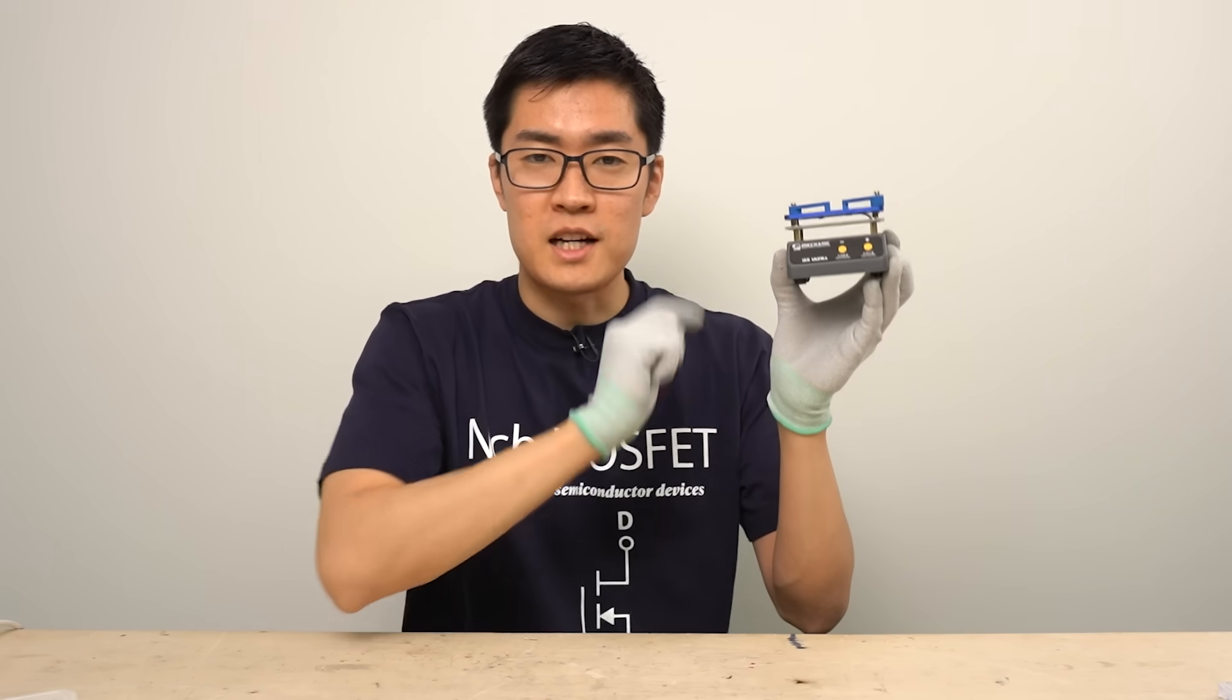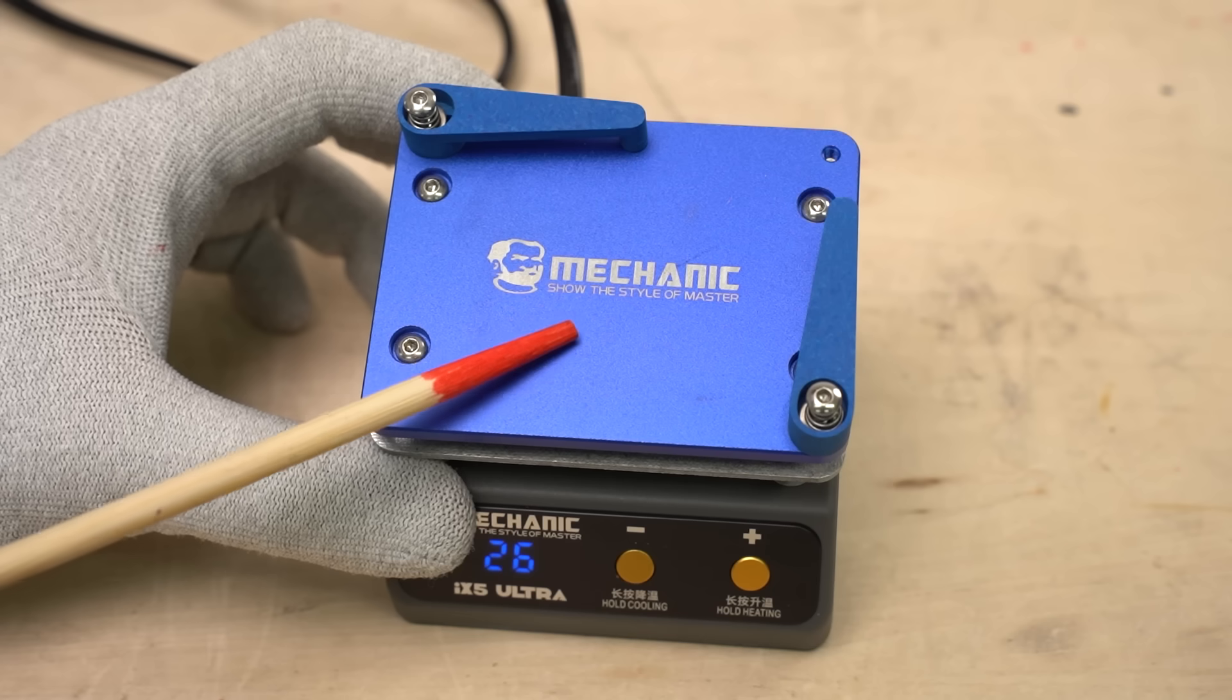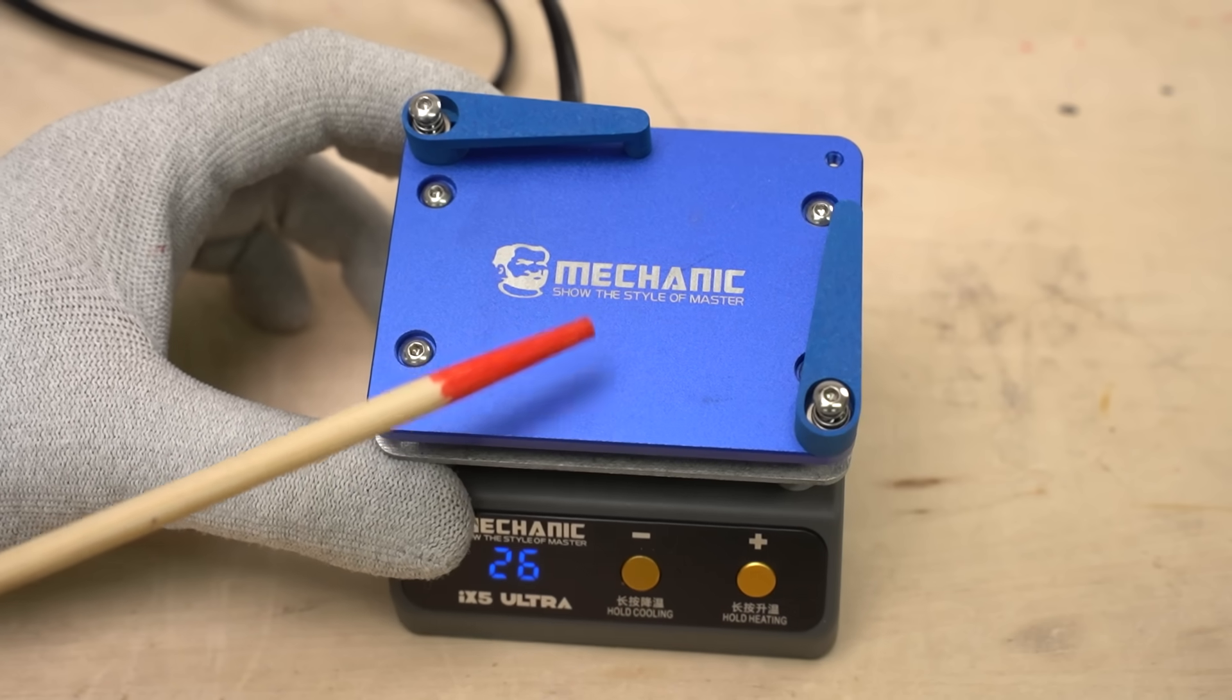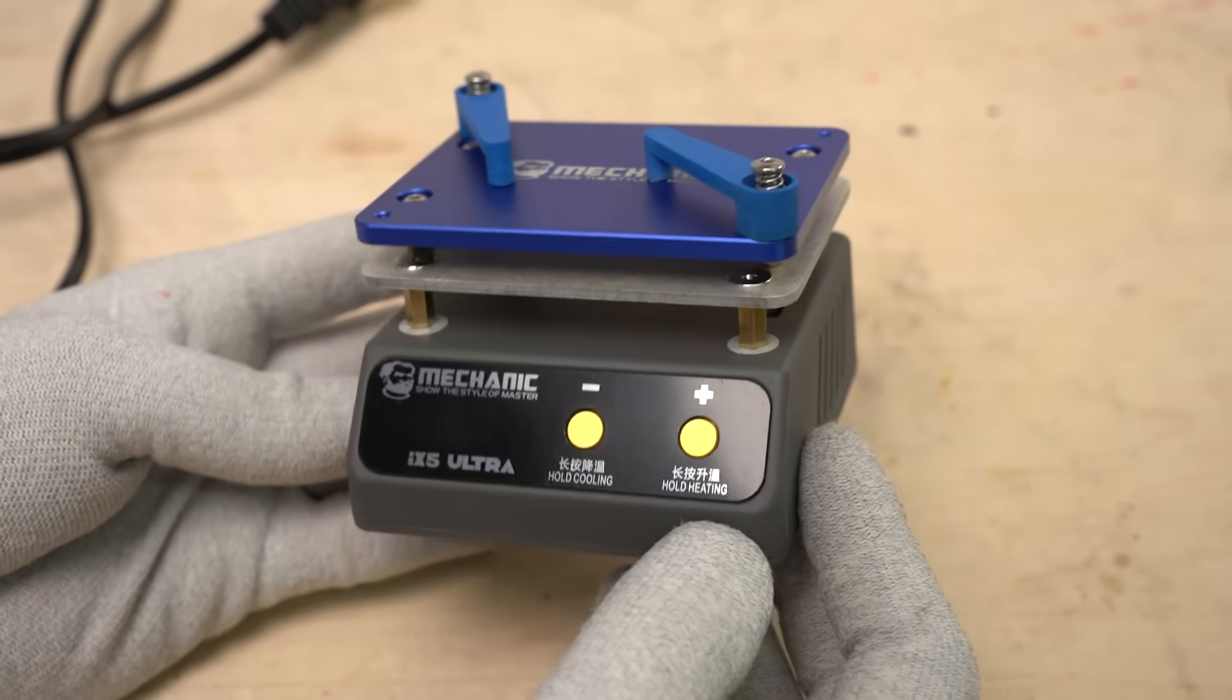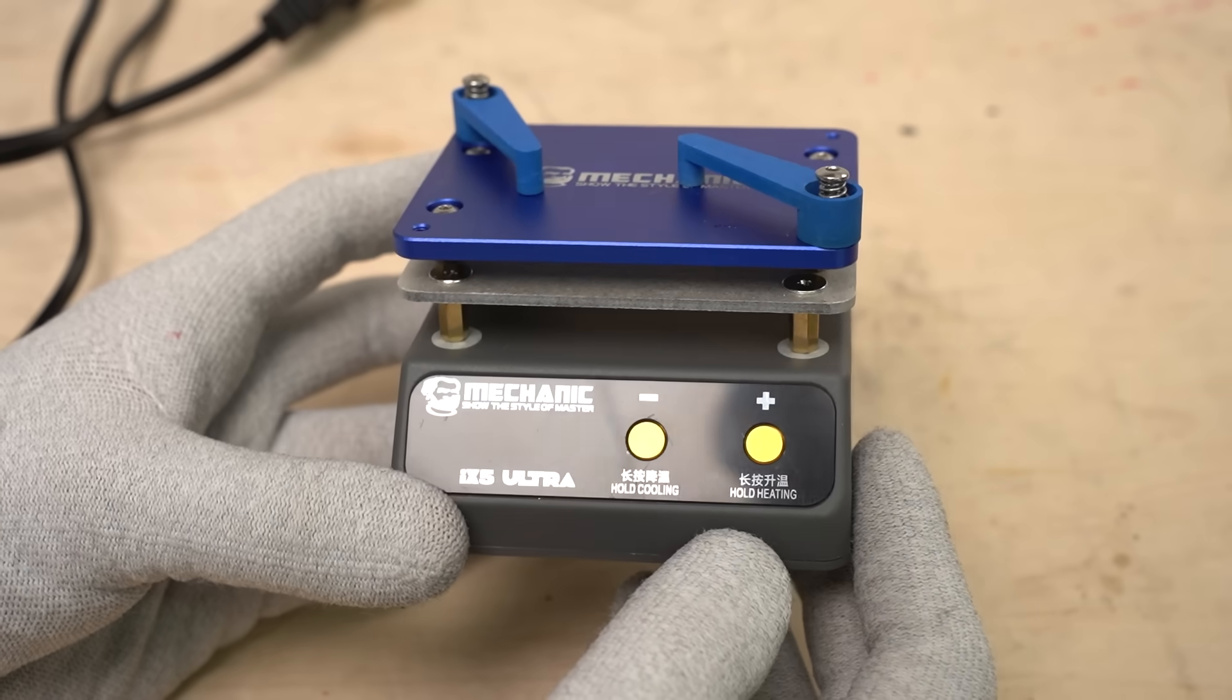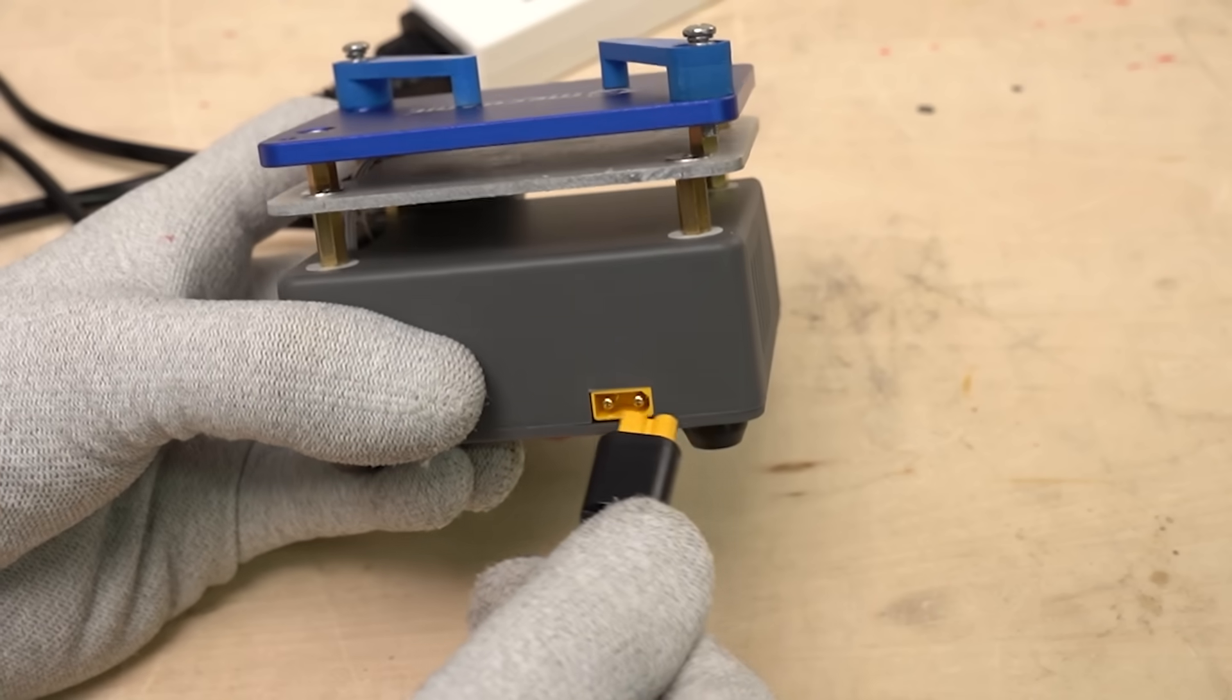Next, this is also a reflow plate. But this one is a little bigger and looks more solid. It's made by a manufacturer called Mechanic. I purchased this reflow plate for just under $19. Including shipping fee, it's nearly $25. Unlike the PD powered reflow plate we saw earlier, this one draws power from the outlet.